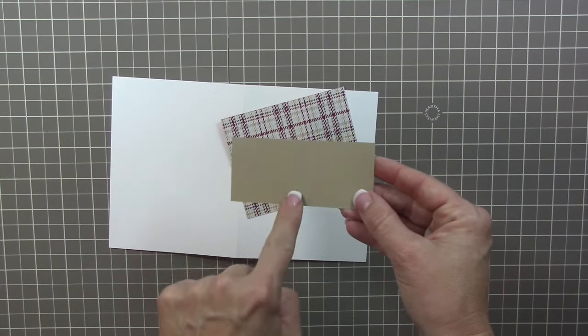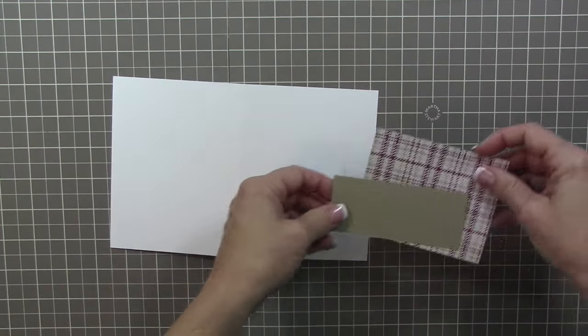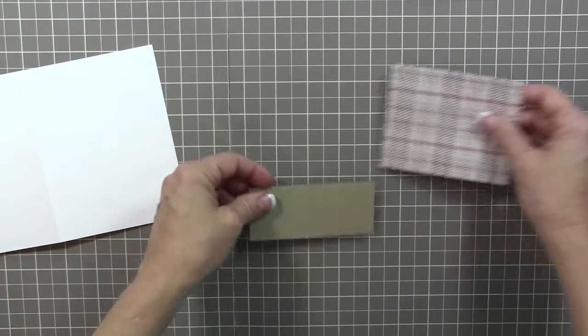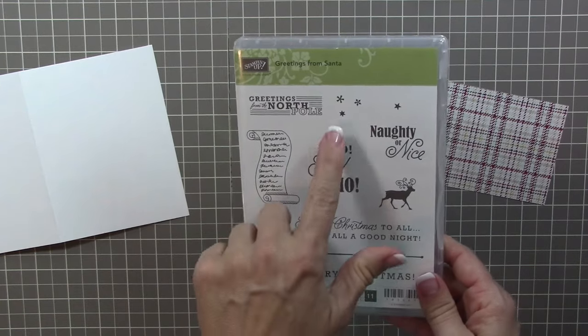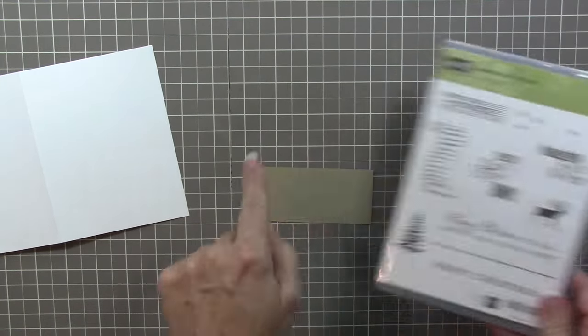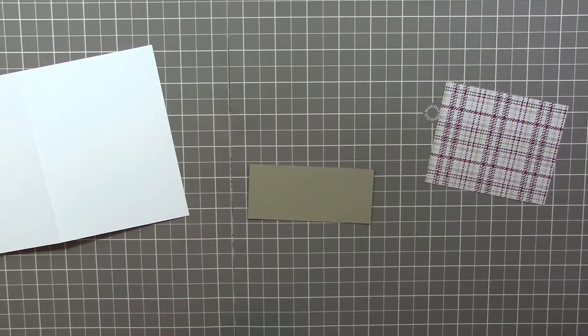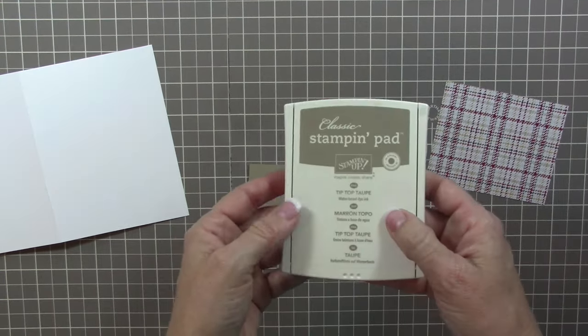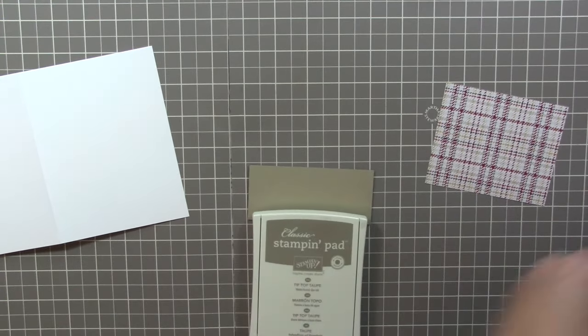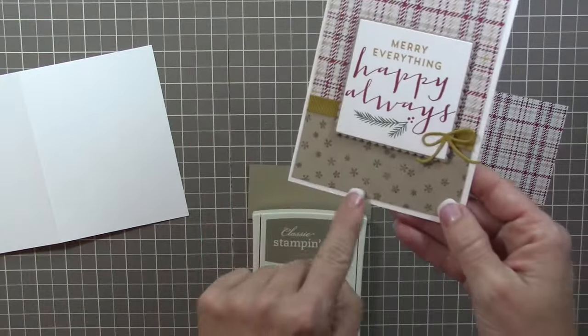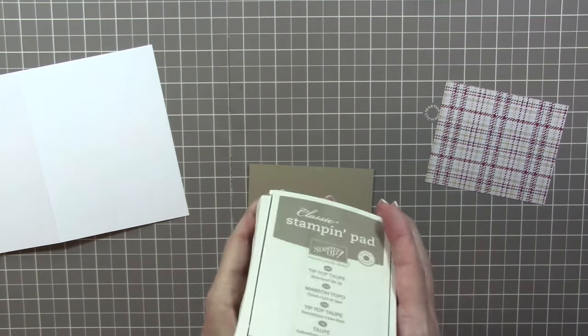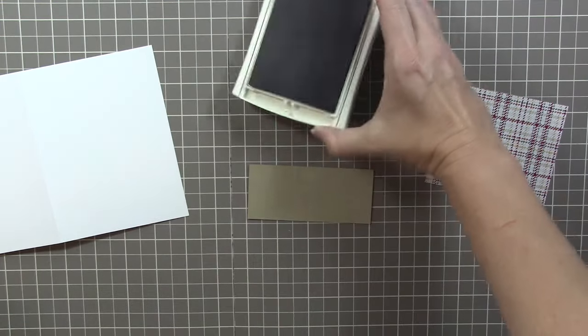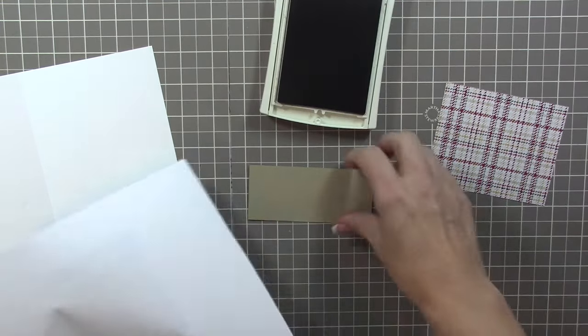I'm starting off with a piece of crumb cake cardstock that measures four by two, and I am using the Greetings from Santa stamp set. I'm using just those stars to make a background on this. I'm using Tip Top Taupe. Now I could have used crumb cake, but I wanted it to be a little bit bolder, so that's where I decided to use the Tip Top Taupe.